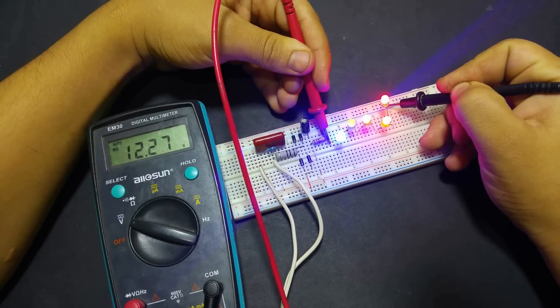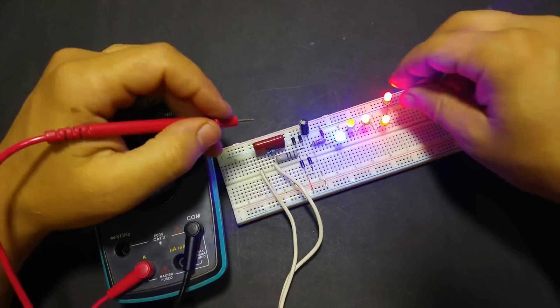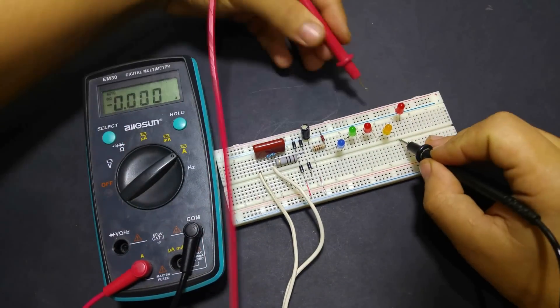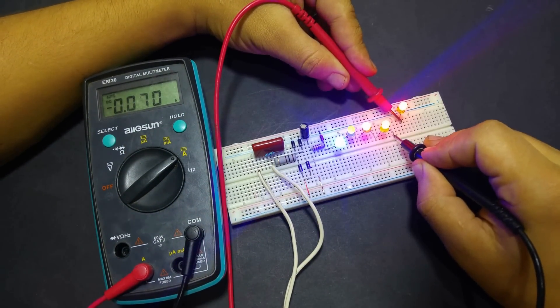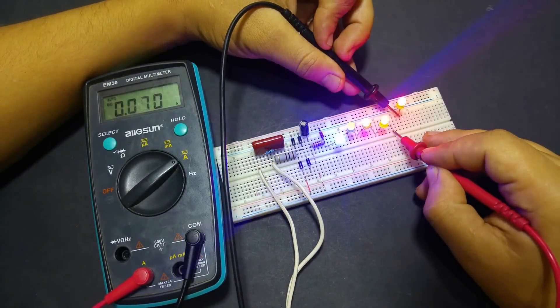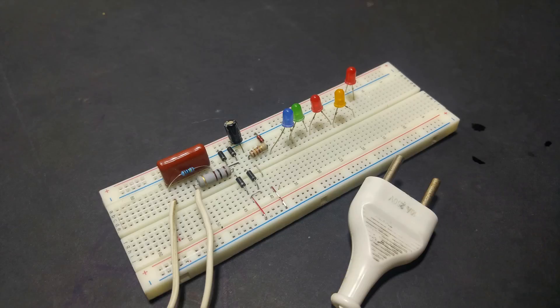Now, I will test the whole circuit on the breadboard. Be careful it is very dangerous. By adding leads to the output we always have 12 volts, 70 milliampere.